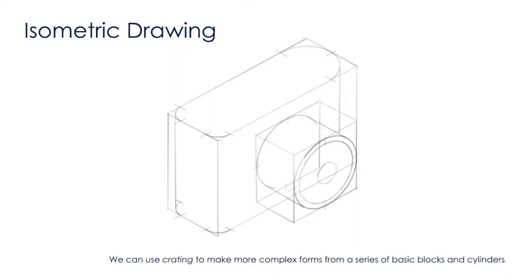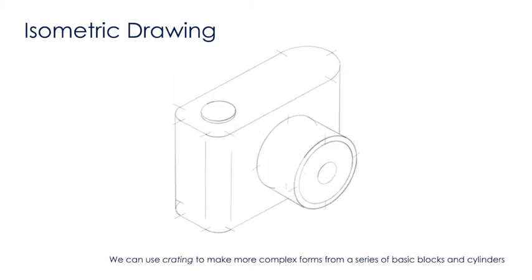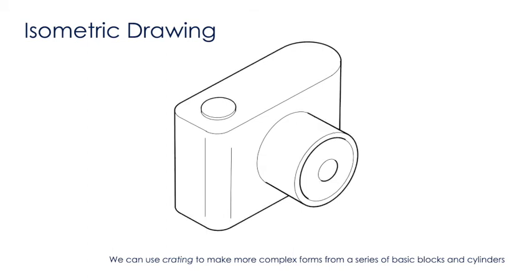And then finally, get rid of any construction lines. I can then ink out the lines that I want to keep, putting a thicker line around all the outside edges just to emphasize them.